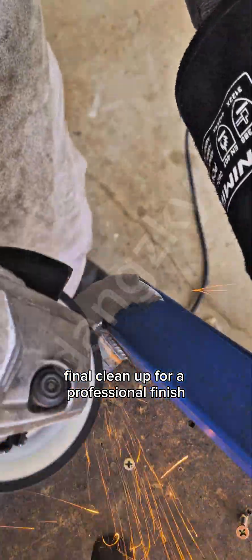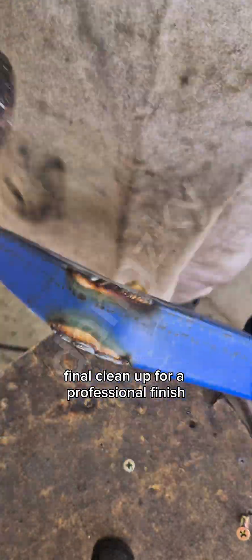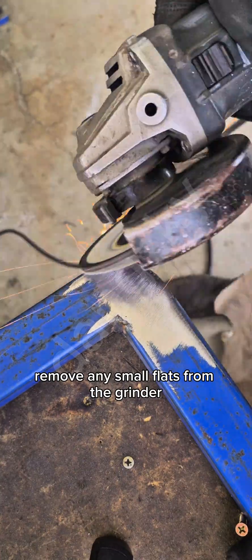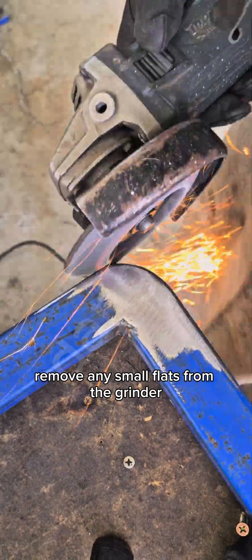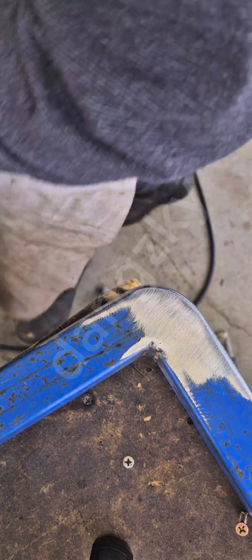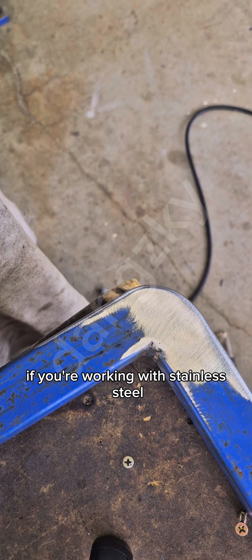Final cleanup. For a professional finish, use a 120-grit flap disc or Scotch-Brite. Remove any small flats from the grinder and blend the radius into both sides evenly. If you're working with stainless steel, avoid overheating and discoloration.